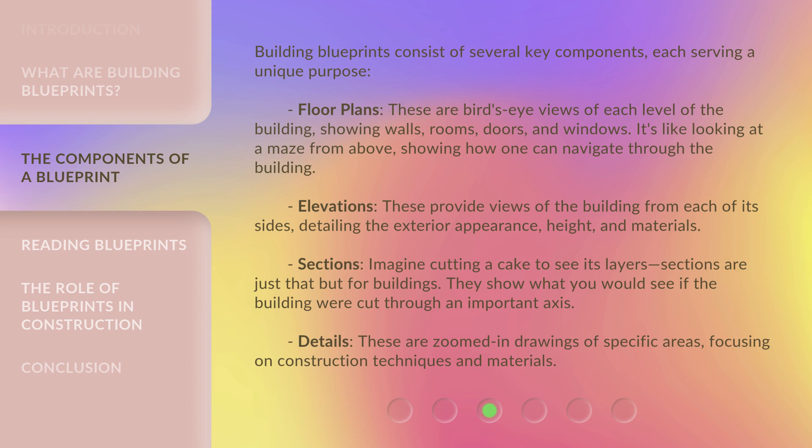Elevations provide views of the building from each of its sides, detailing the exterior appearance, height, and materials. They show what you would see if the building were cut through an important axis. Details are zoomed-in drawings of specific areas, focusing on construction techniques and materials.